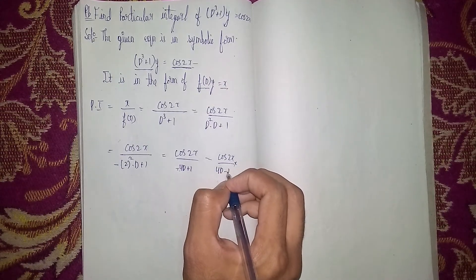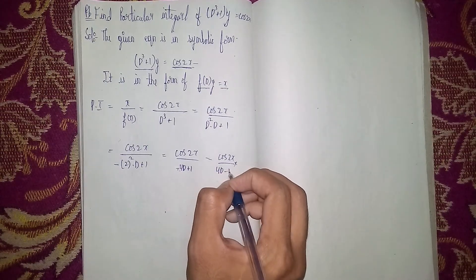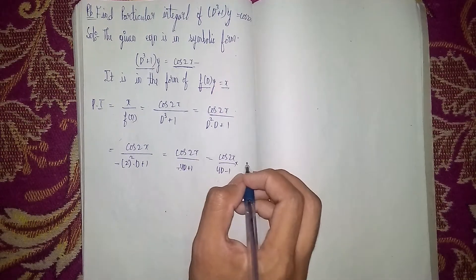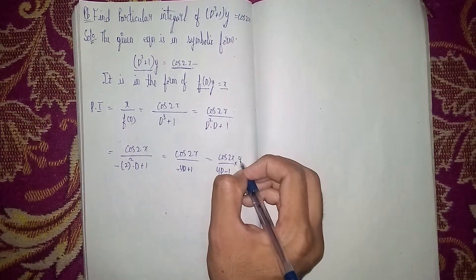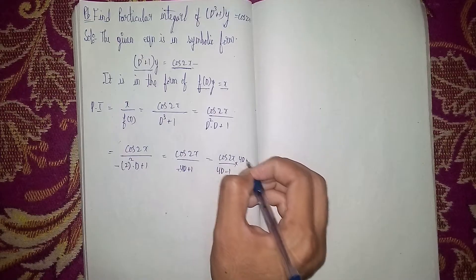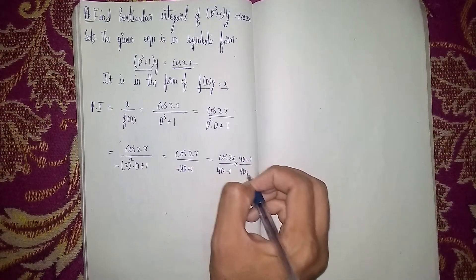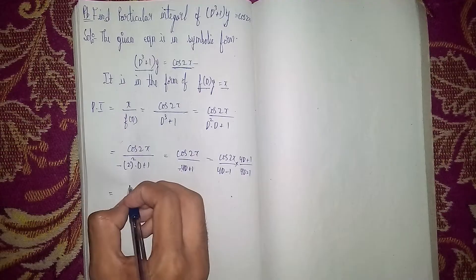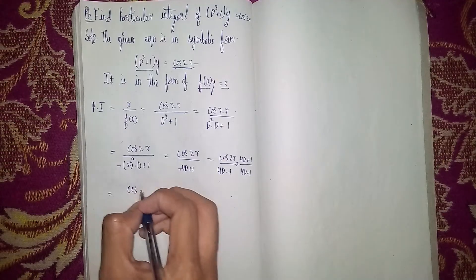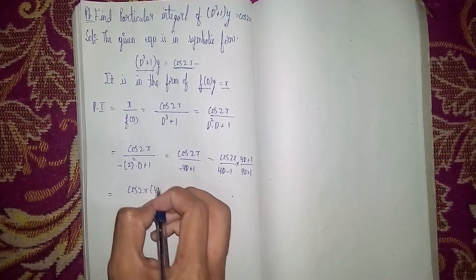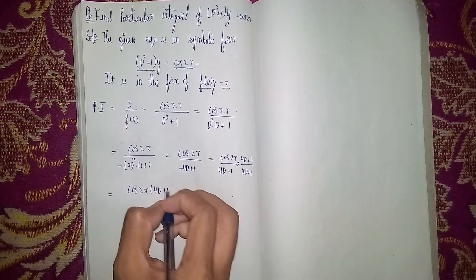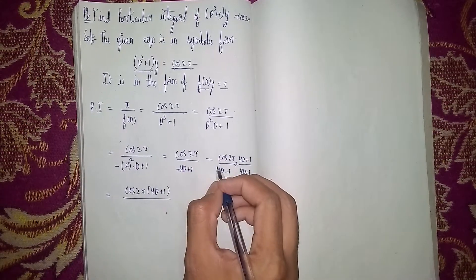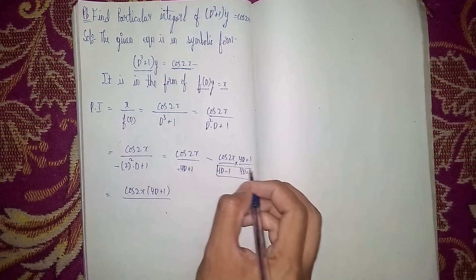Now I am rationalizing the denominator. Multiply numerator and denominator by the conjugate (4D + 1), since −(−4D + 1) gives (4D − 1), and we rationalize by multiplying by (4D + 1) over (4D + 1).